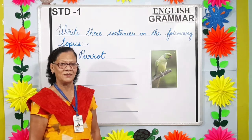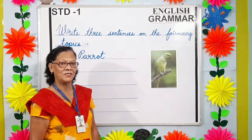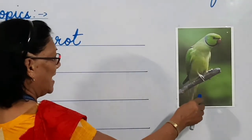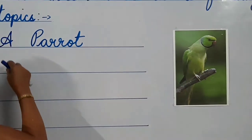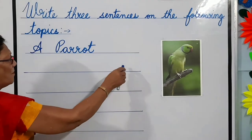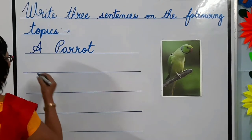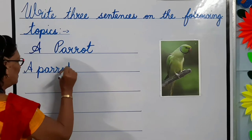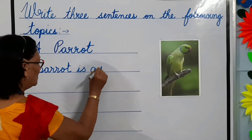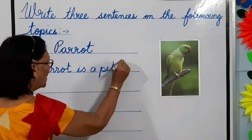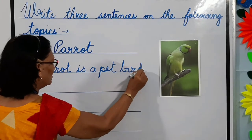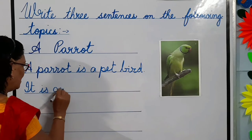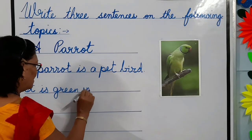So students, let us start with our first topic. Students, can you recognize this picture? Yes, it is a parrot. Now we will write three sentences about a parrot. A parrot is a pet bird. It is green in color.